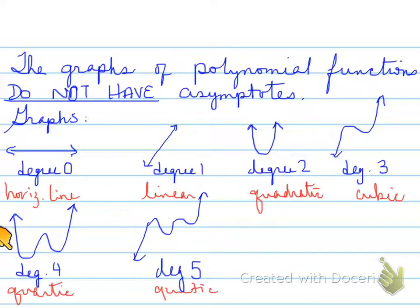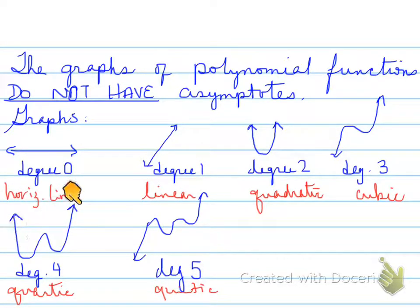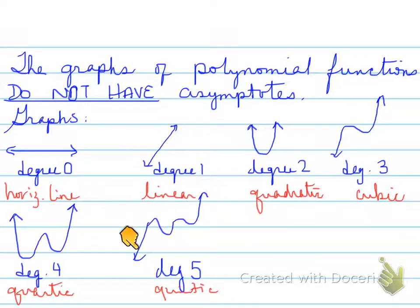Looking over here, degree four is a quartic — interesting things going on there that we'll find out more about. And degree five, you've got some interesting behavior, but degree five is called a quintic. After that, we pretty much don't name anything past that point — we just say degree six, and so on.